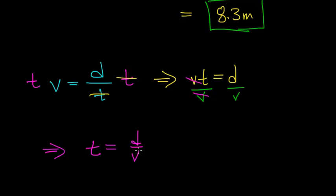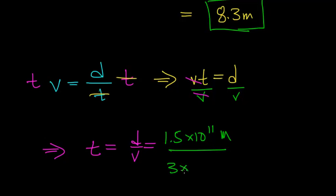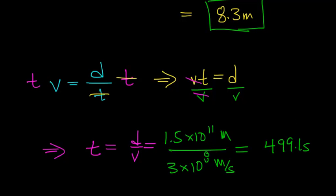So time equals distance divided by velocity. We know that the distance between the sun and the earth is 1.5 times 10 to the 11th meters, and light is traveling at 3 times 10 to the 8th meters per second. When you do this division, you again get 499.1 seconds, which we already determined equals 8.31 minutes.